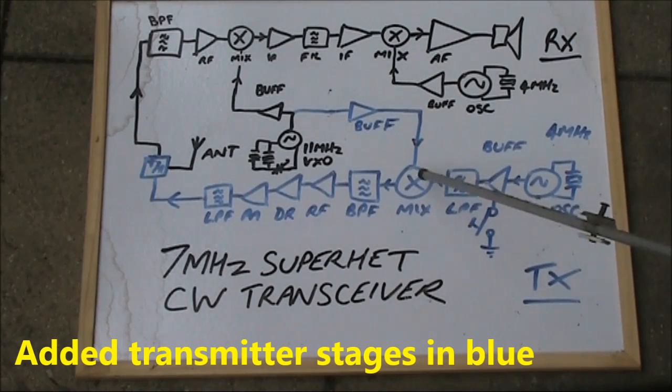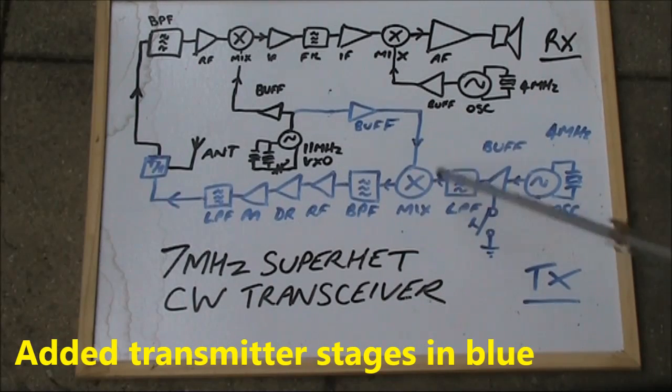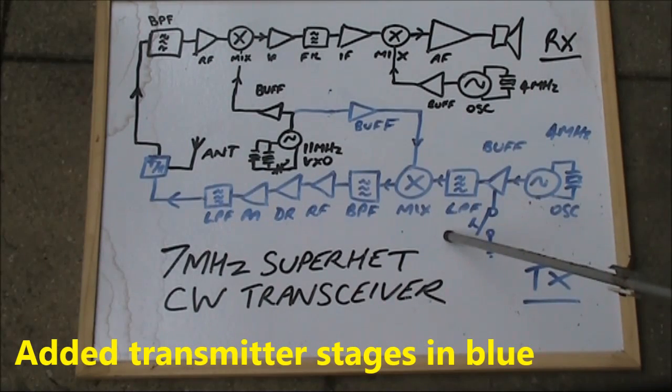When the key is down, we've got 4MHz here. When it's up, we don't. So that provides the keying for the transceiver.